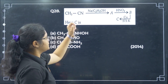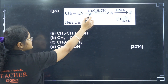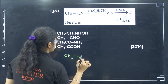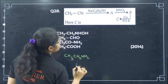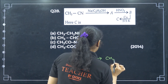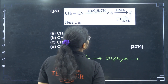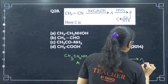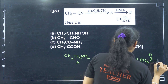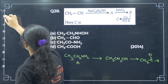CH3CN with Na and C2H5OH is a reducing agent, giving CH3CH2NH2 (this is A). Then with nitrous acid (HNO2), we get CH3CH2OH. Then with copper at 573 K, the product is CH3CHO (ethanal). So ethanol is the intermediate product — option B.